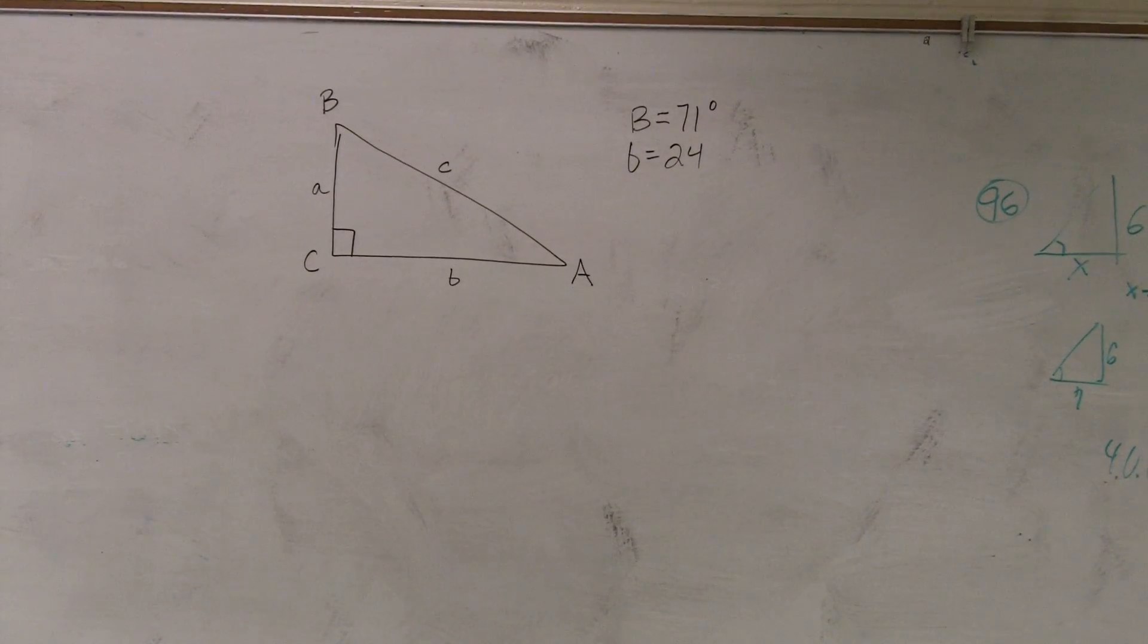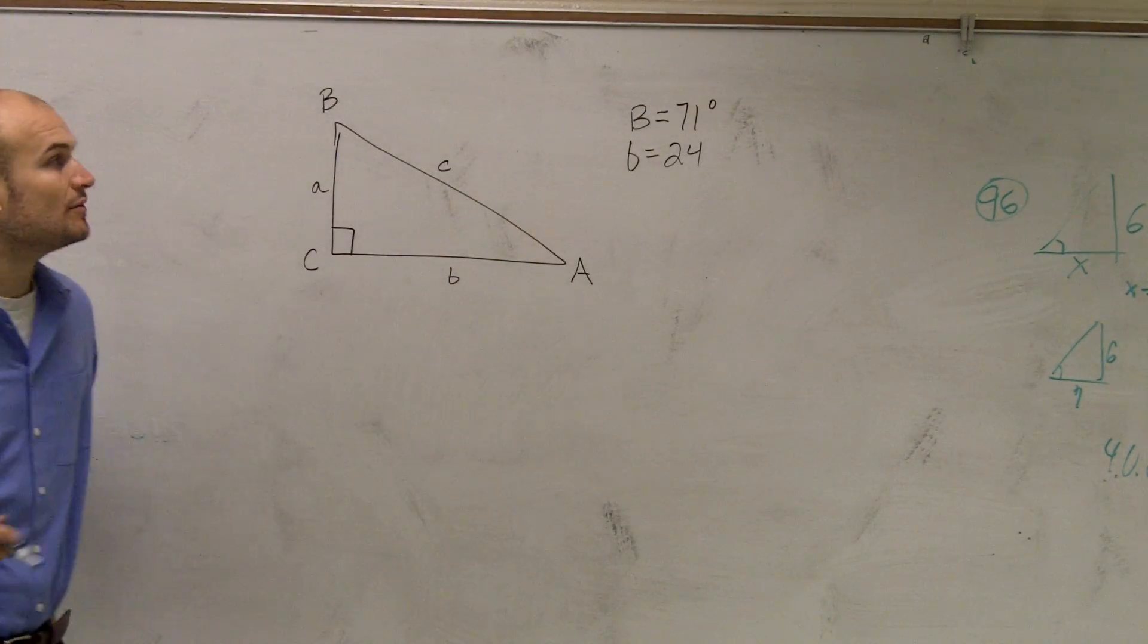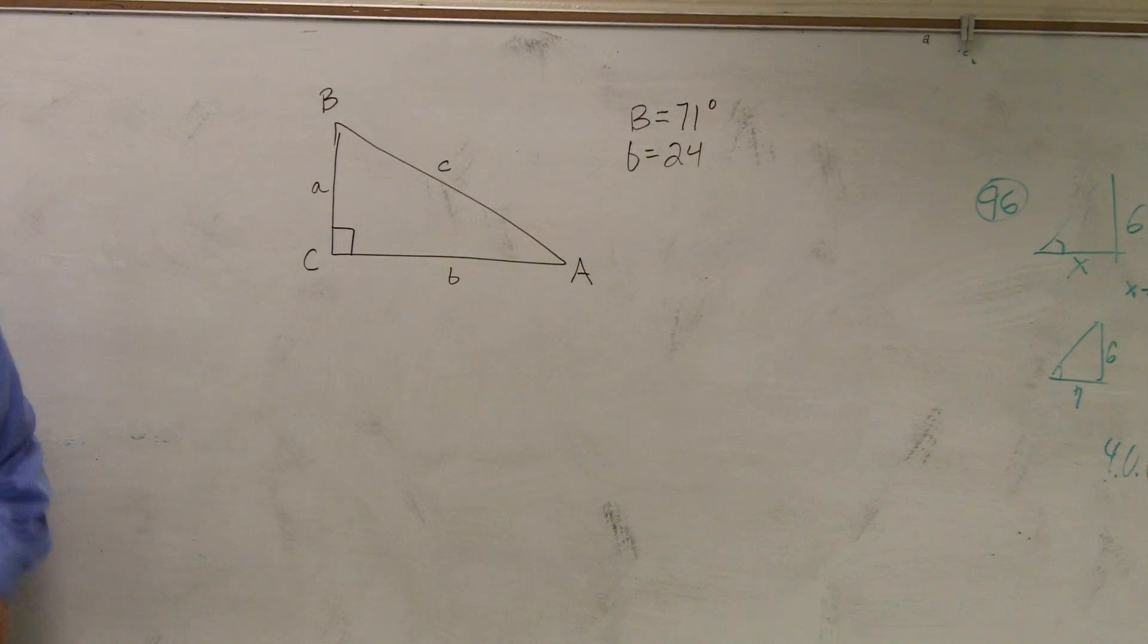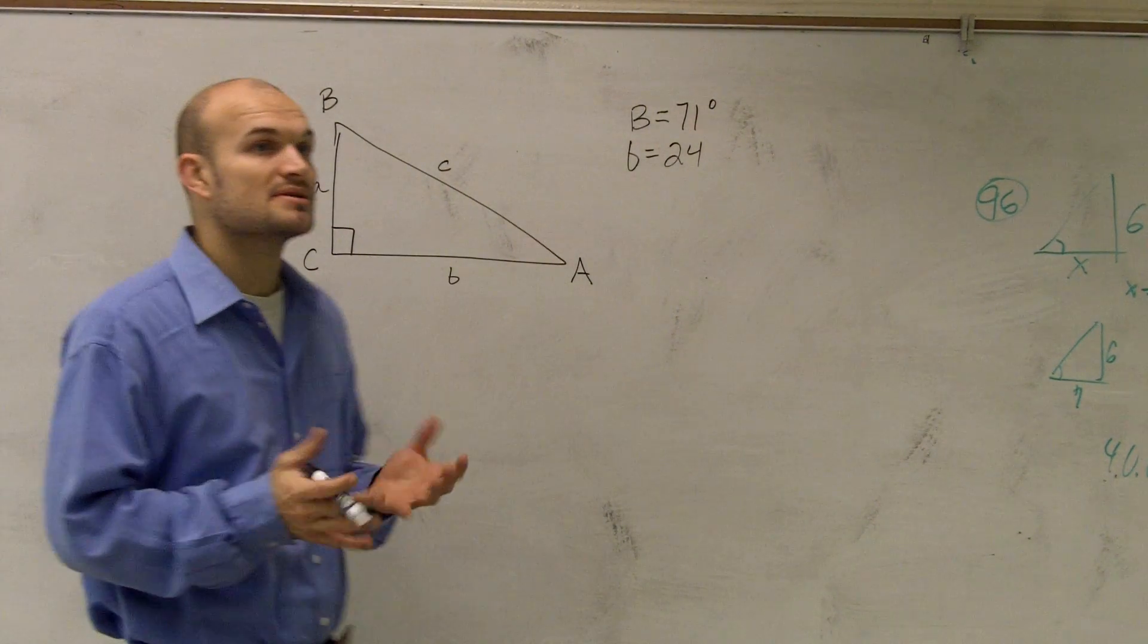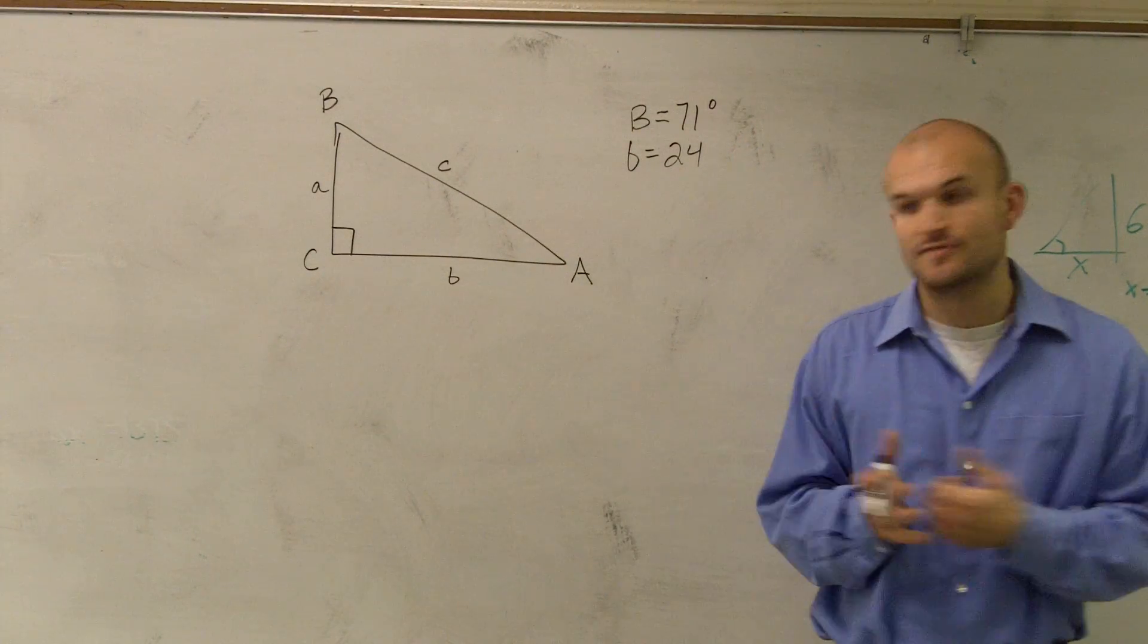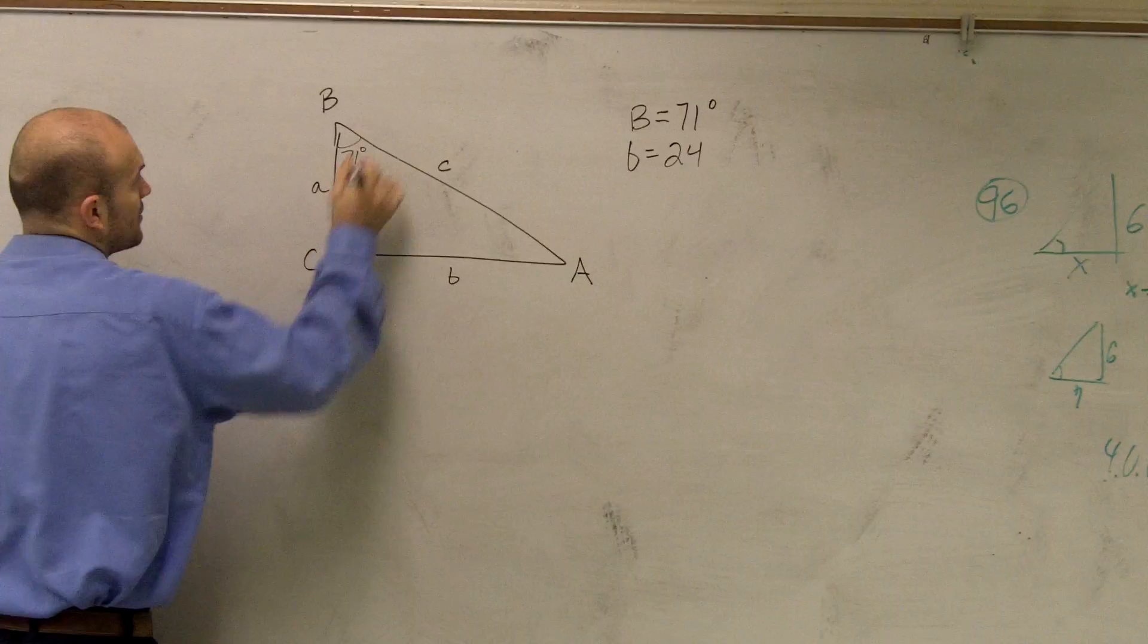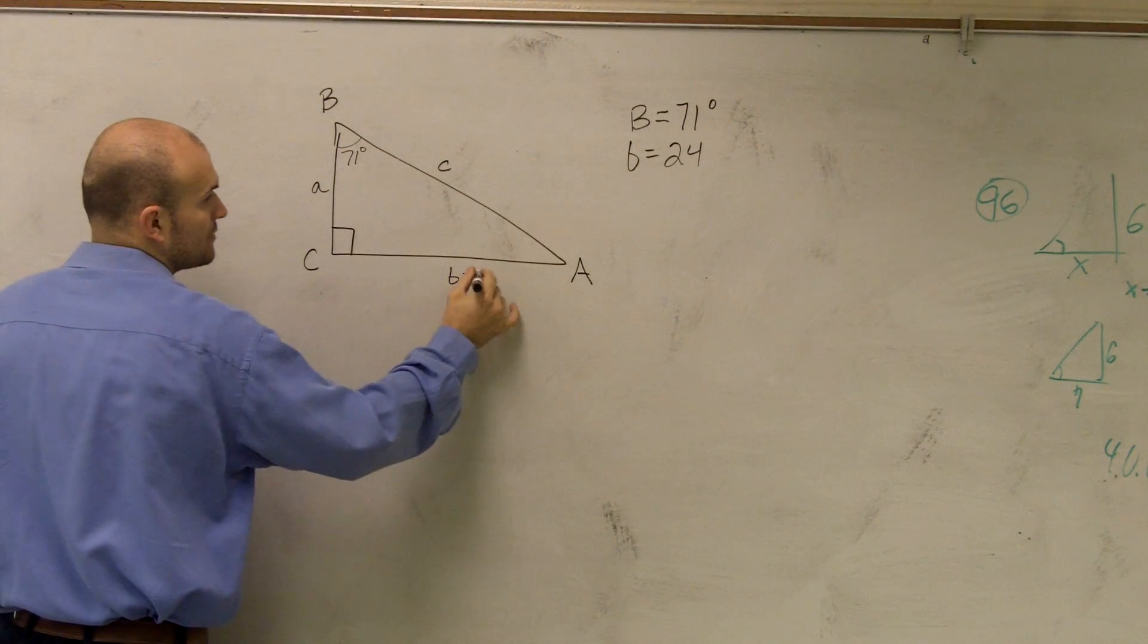Alright, and on this right triangle, the only information that you're provided is that B equals 71 degrees and b equals 24. So when you're doing these types of problems, please make sure you have a picture of the triangle right now, and then let's just fill in the information. So this angle B is 71 degrees, and b equals 24.